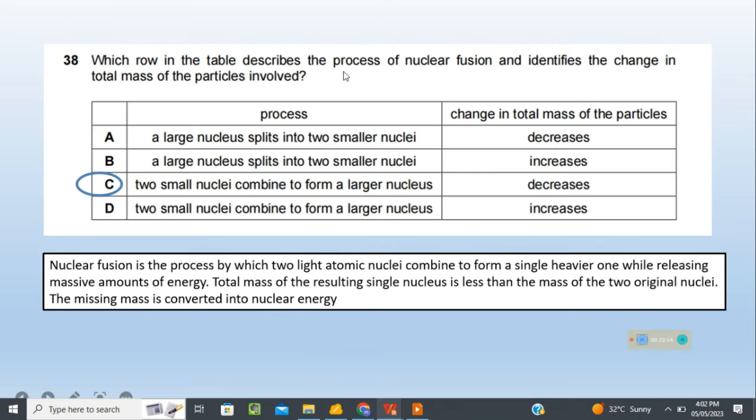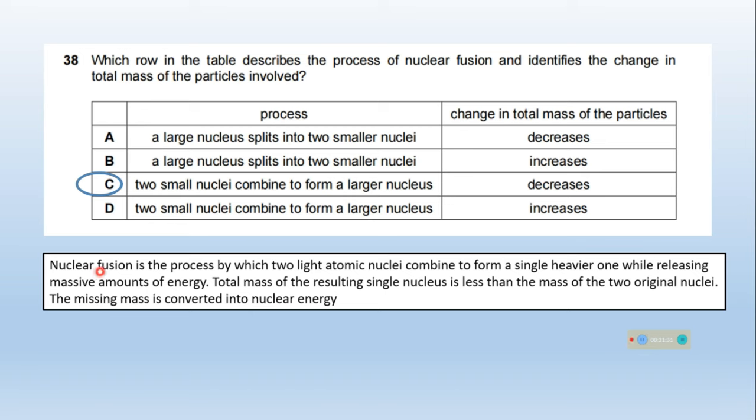Which row describes nuclear fusion and identifies the change in total mass? Nuclear fusion is the process by which two light atomic nuclei combine to form a single heavier one while releasing massive amounts of energy. Total mass of the resulting nucleus is less than the mass of the two original nuclei. The missing mass is converted into nuclear energy. Two small nuclei combine to form a larger nucleus, and total mass decreases. Option C is correct.